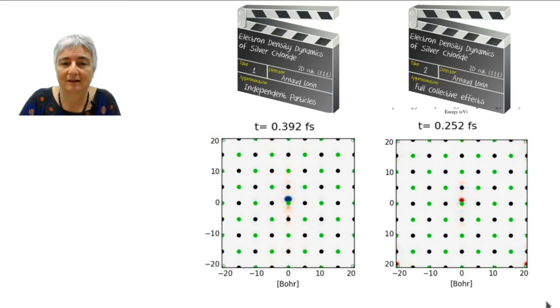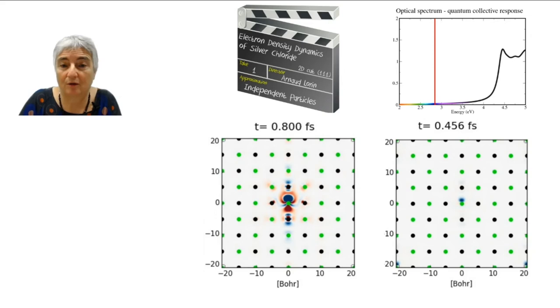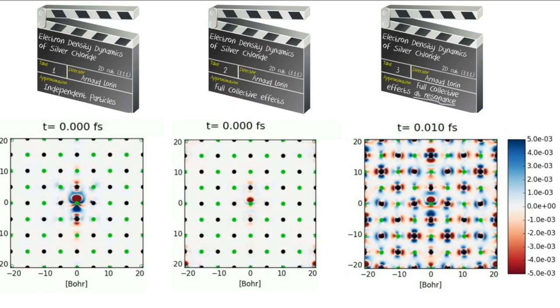But wait. Of course, the reaction of the material depends on how we hammer on it. The color of the light depends on its frequency, which corresponds to a specific energy. Here, we had chosen 2.8 electron volts. We can situate this energy, here the red line, in the absorption spectrum of silver chloride. As you can see, we had chosen an energy range where the system does not absorb a lot. So, let us crank the energy up.